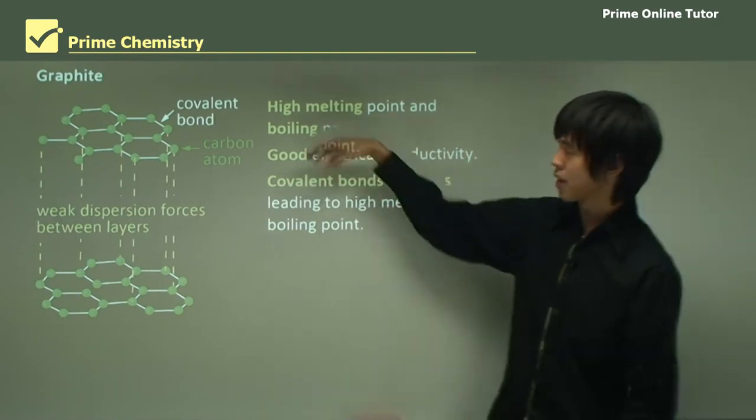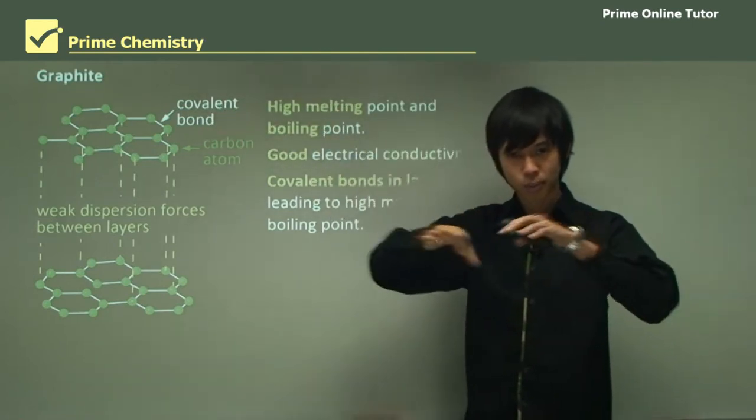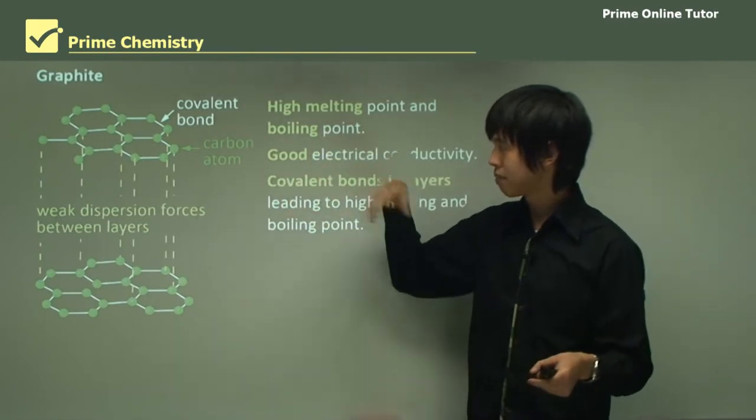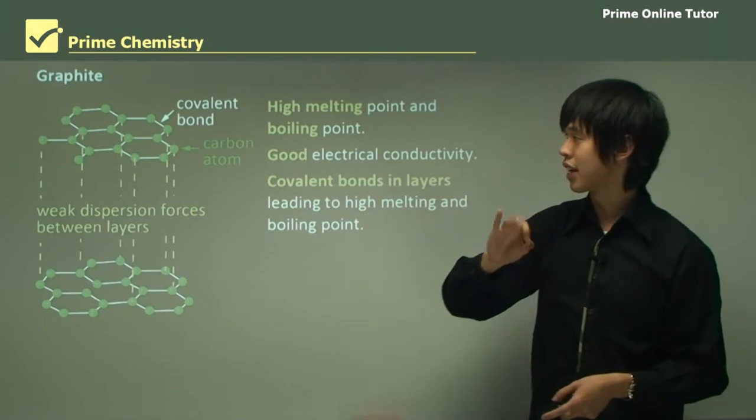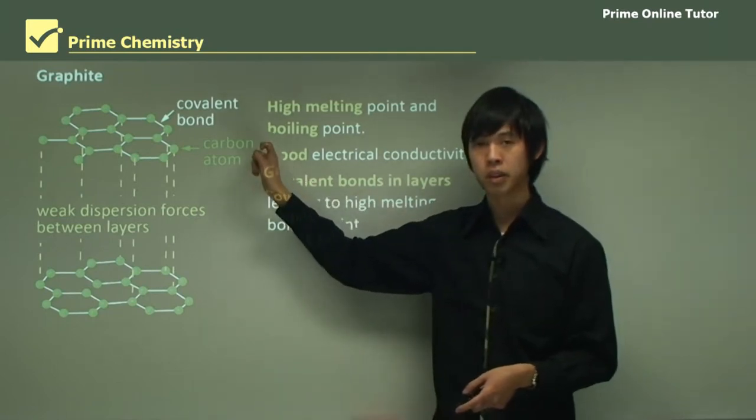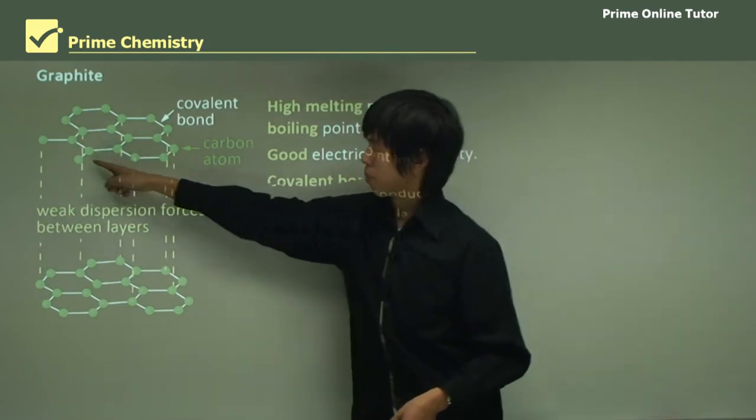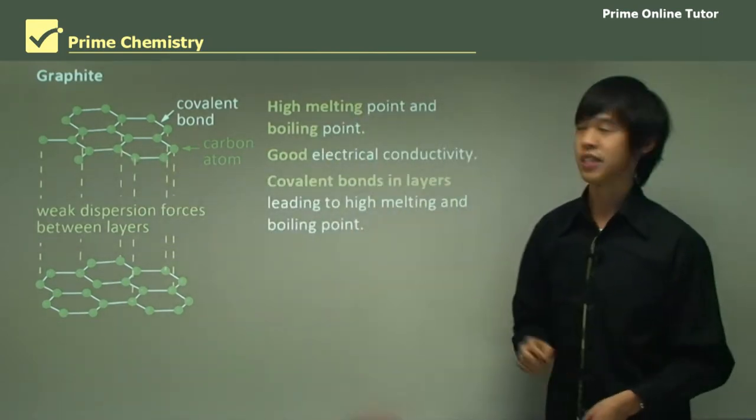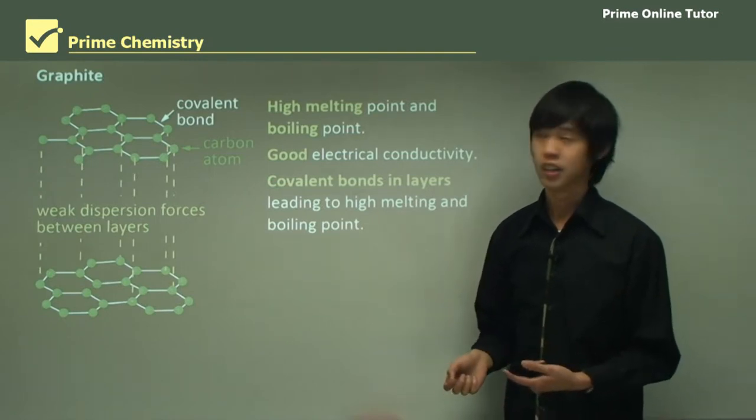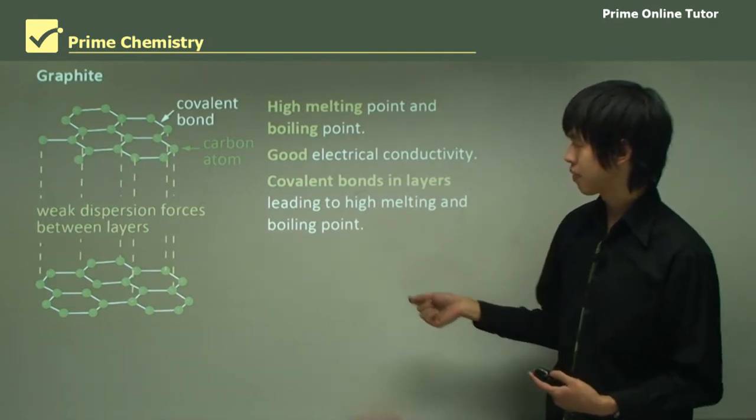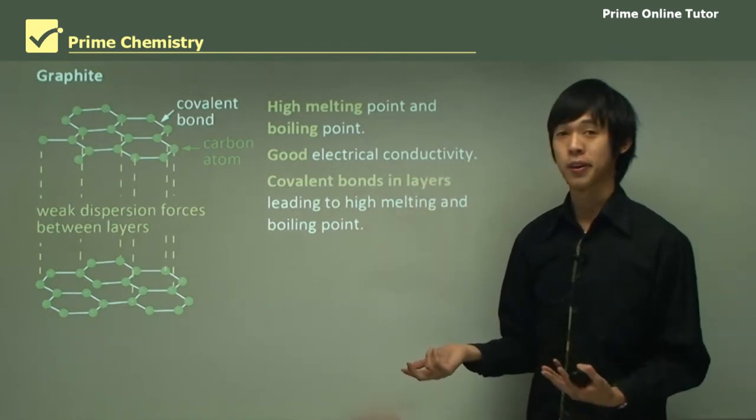By layers I mean they form these hexagonal layered planes. In these planes, as you can see, there are only three bonds to every carbon atom. You can see for this carbon atom here, there's one, two, three. Which means that of course there's one bond left. That free electron can be used to conduct electricity. That's why it conducts electricity whereas diamond doesn't.